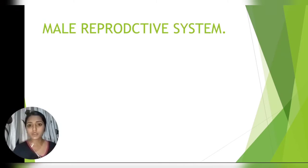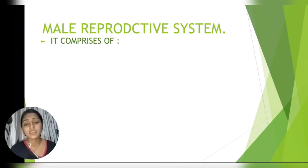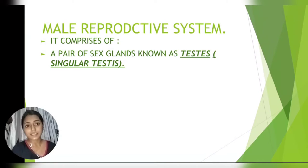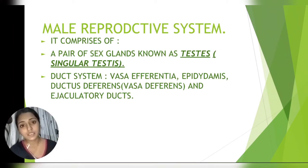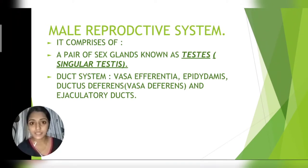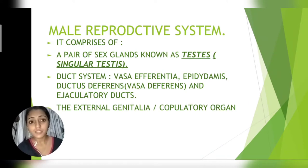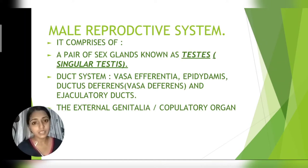In this video, we will cover the male reproductive system. It comprises mainly: first, a pair of sex glands known as testes; second, the duct system, which constitutes vasa efferentia, epididymis, ductus deferens (also called vasa deferens), and ejaculatory duct; and third, the external genitalia or the copulatory organ, that is, the penis.